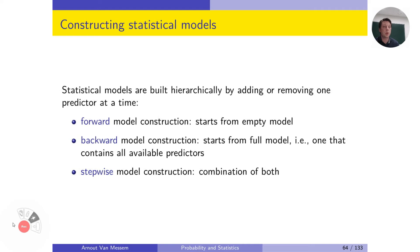A third option is to use a combination of both. It is important to note that every predictor will always be included one by one — we will never add or remove more than one predictor at the same time. Furthermore, the models are hierarchical, which means that if we have higher-order or interaction terms, we always have to keep the lower-order terms that make up those higher-order terms, even if they are insignificant.